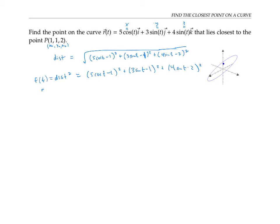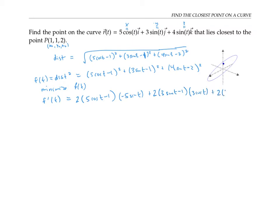I want to minimize it by taking the derivative and setting it equal to zero. Rather than expand out these expressions first before I take the derivative, I'm just going to take the derivative directly using the chain rule. That gives me two times five cosine t minus one, times the derivative of the inside, which is negative five sine t, plus two times three sine t minus one times the derivative of its inside, three cosine t, plus two times four sine t minus two times the derivative of its inside, four cosine t.